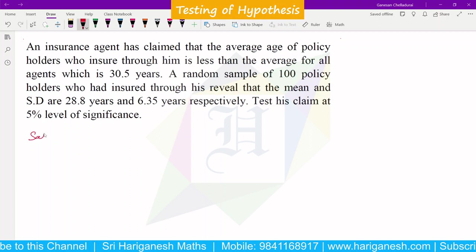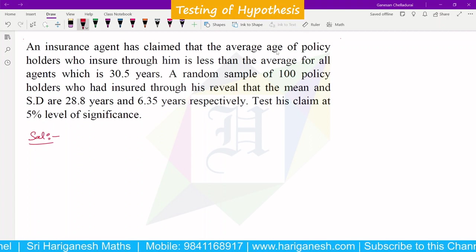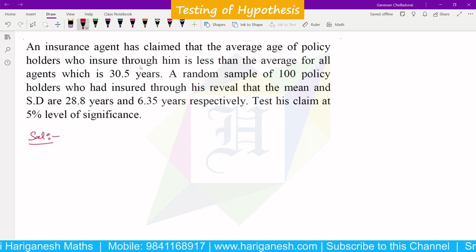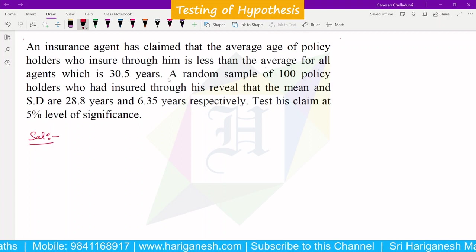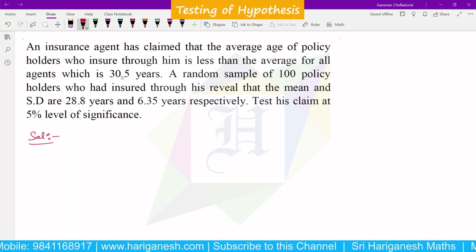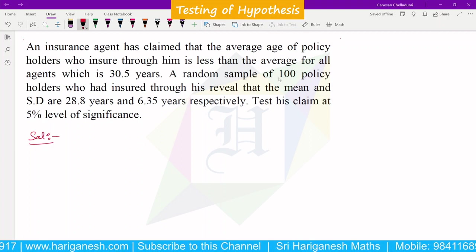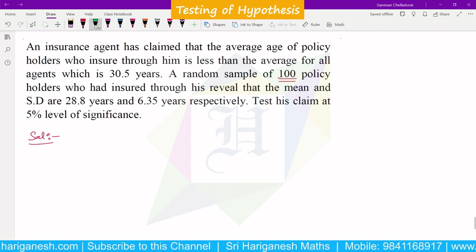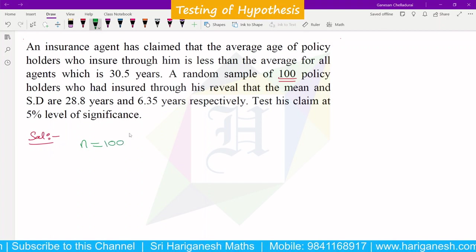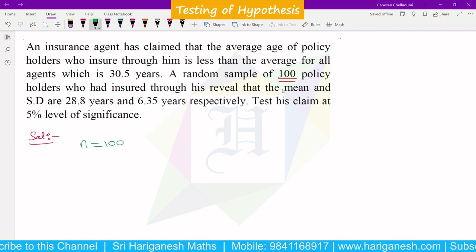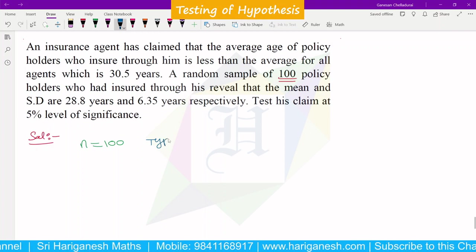First, sample size identification. An insurance agent has claimed that the average age of policy holders who insure through him is less than the average for all agents, which is 30.5 years. A random sample of 100 policy holders, so n equals 100. This is a large sample, the number is clearly identified.